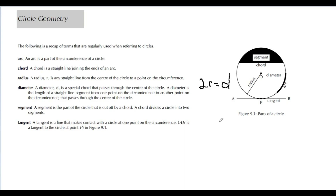A segment is a part of the circle that is cut off by a chord. A chord divides the circle into two segments — the chord is basically cutting up the circle. The shaded part is a segment and the remaining part is also a segment, just a different one.